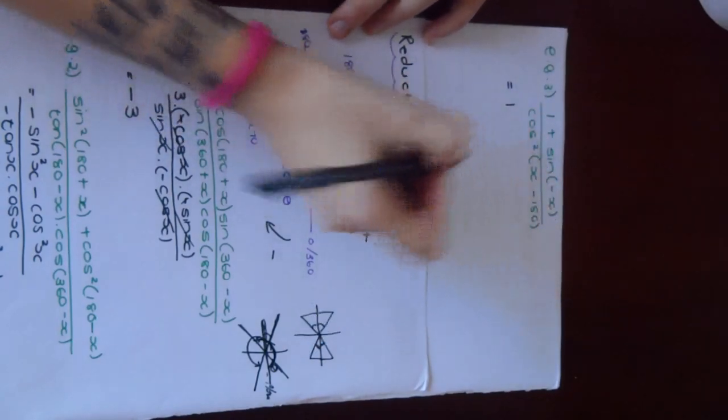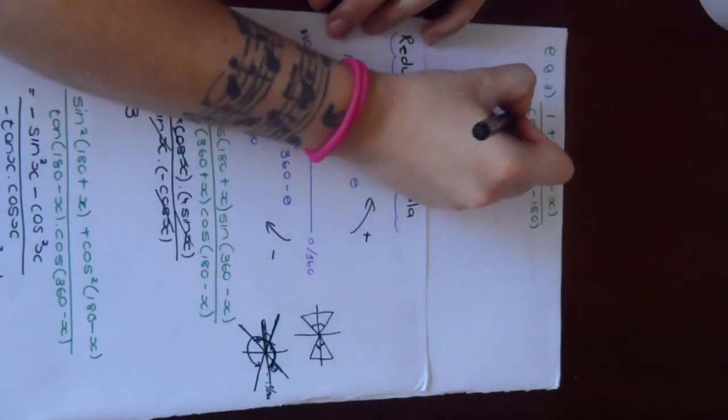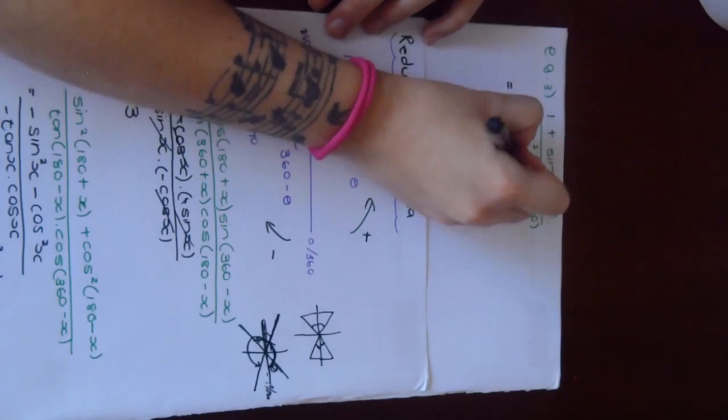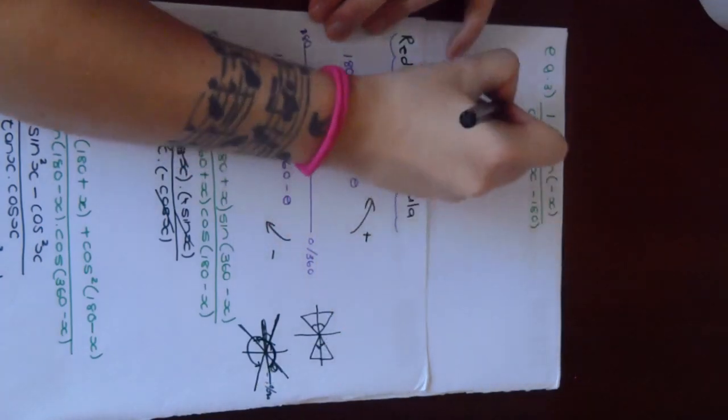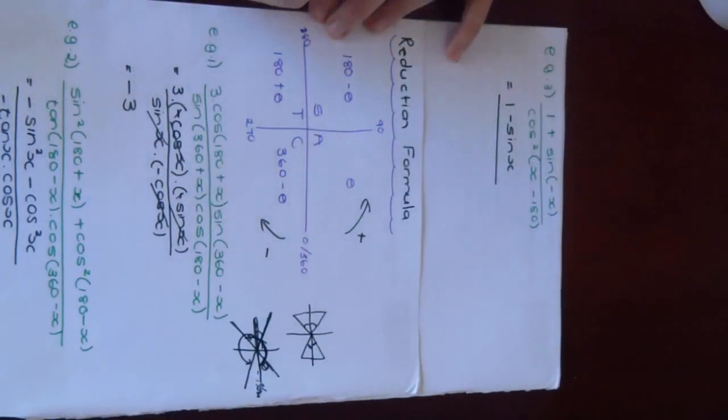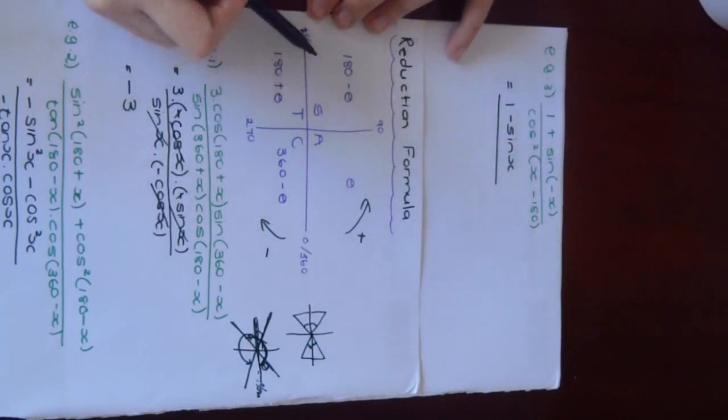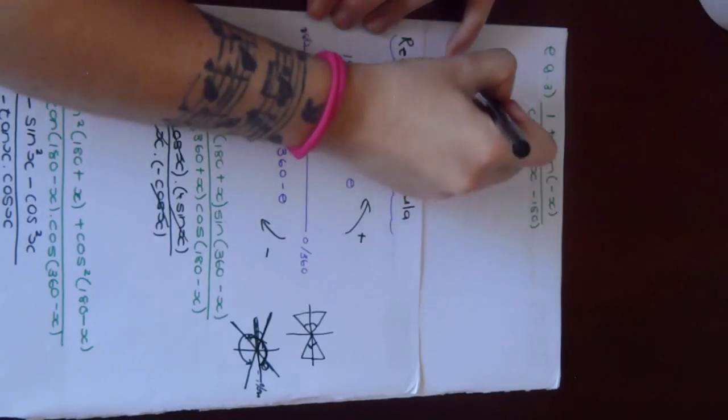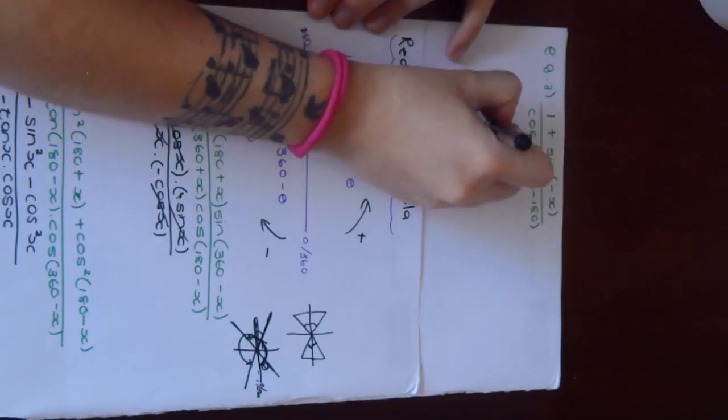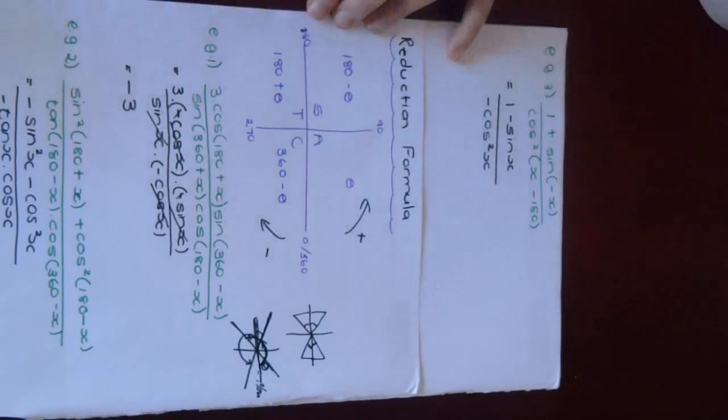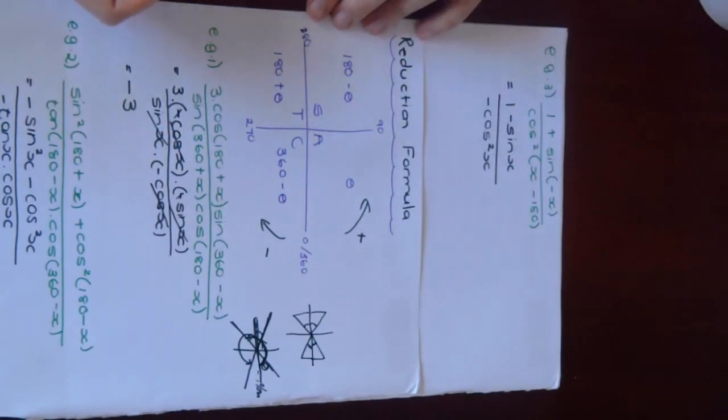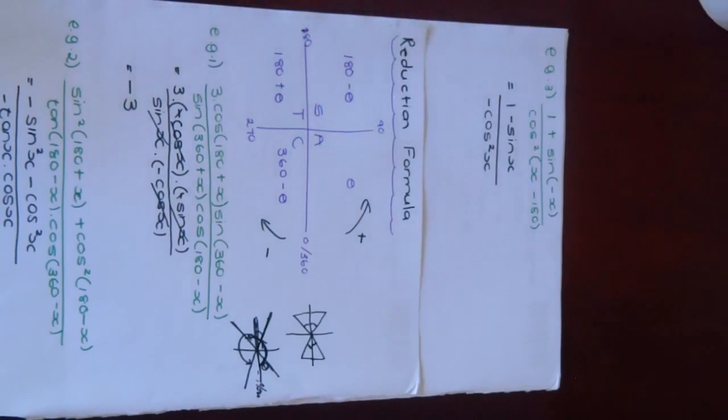Your sine over here is going to be negative. So this is a 1, and then we said that sine here is negative. So it becomes negative sine X. Cos at 180 minus X is here. So cos is negative. This becomes negative cos squared X. Simple enough, right? Let me do the next video. It's also for today. It's going to be on co-ratios.